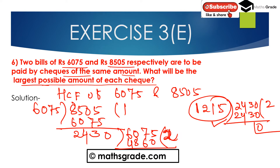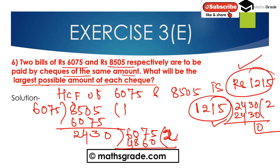The highest common factor of 6075 and 8505 is 1215. So the largest possible amount of each check will be 1215 rupees.